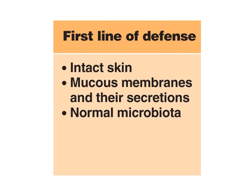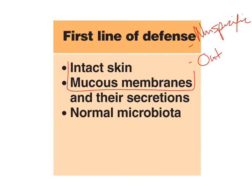This video is going to focus on your first line of defense. The first line of defense is nonspecific and it is meant to prevent infection — its whole purpose is to keep microbes out of your tissues. It is composed of several things: different tissues that make up barriers to prevent infection, such as the skin and mucous membranes, as well as different secretions and chemical factors that your body secretes to prevent infection, and your normal microbiota.